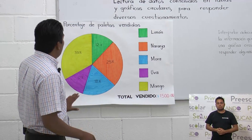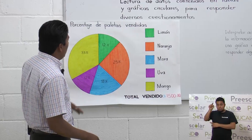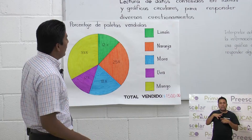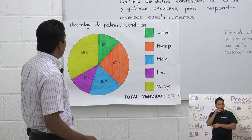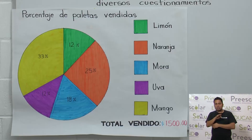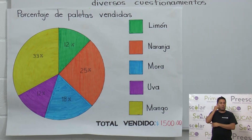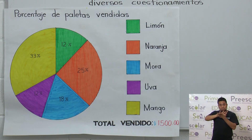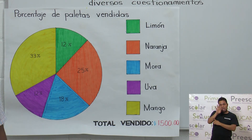Aquí está la gráfica que podemos ir analizando. Podemos ver que se trata de paletas y que hay sabores: limón, naranja, mora, uva y mango. Tenemos porcentajes: 33% de mango, 12% de limón, 25% de paletas de naranja, 18% de paletas de mora y 12% de paletas de uva. Tenemos un dato adicional muy importante: la cantidad total vendida es $1,500 pesos.